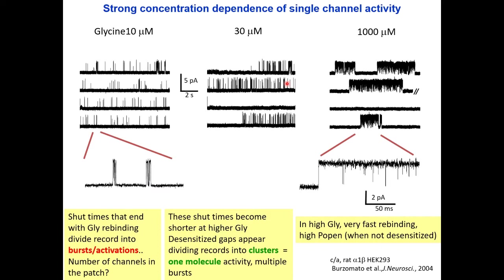The channel cannot really open when it is unbound, so when the channel shuts and dissociates it cannot reopen until agonist rebinds — so the shut time is concentration dependent. As I increase the concentration, these bursts become more closely spaced. Note that we don't know whether the channel operating here and there is the same channel molecule, so these long shut times — the expression of binding and unbinding — are affected by the number of channels in the patch.